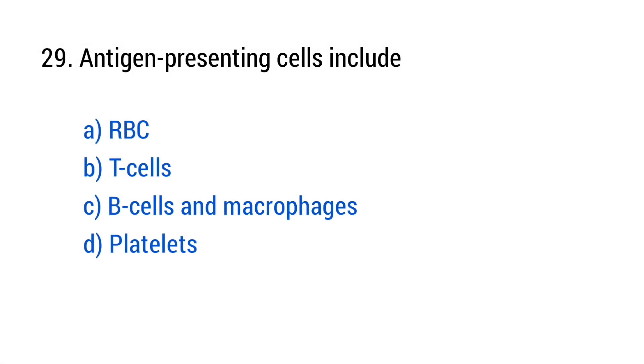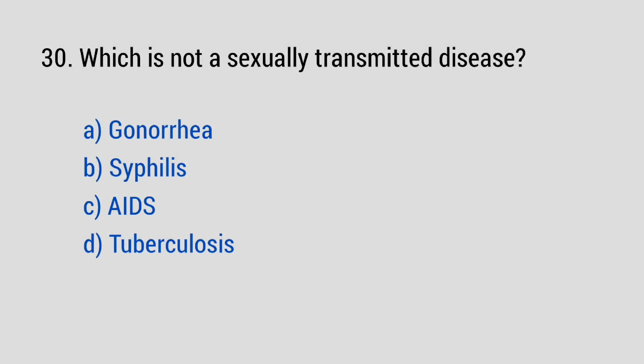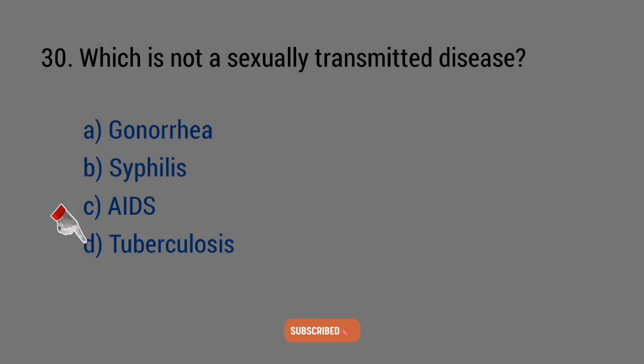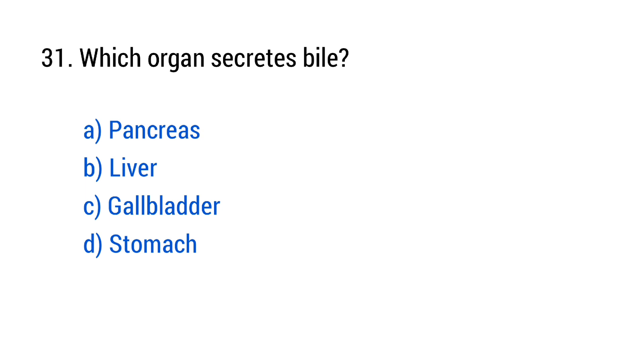Question number 24. Binomial nomenclature was proposed by? The right answer is option D, Linnaeus. Question number 25. The human genome contains approximately how many genes? The right answer is option B, 20,000 to 25,000. Question number 26. Malpighian tubules are excretory organs in? The right answer is option C, insects.